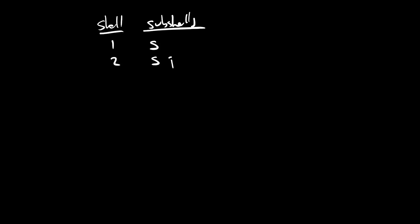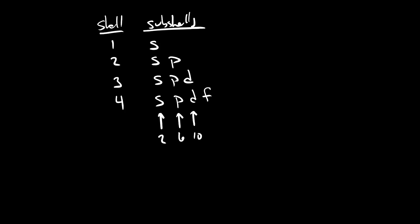In the previous video we saw that shells are broken up into subshells. The first shell has an S subshell only. The second shell has S and P, the third shell has S, P, and D, and the fourth shell has S, P, D, and F. The capacity of each S subshell is two, each P subshell is six, each D subshell is ten, and each F subshell is fourteen.